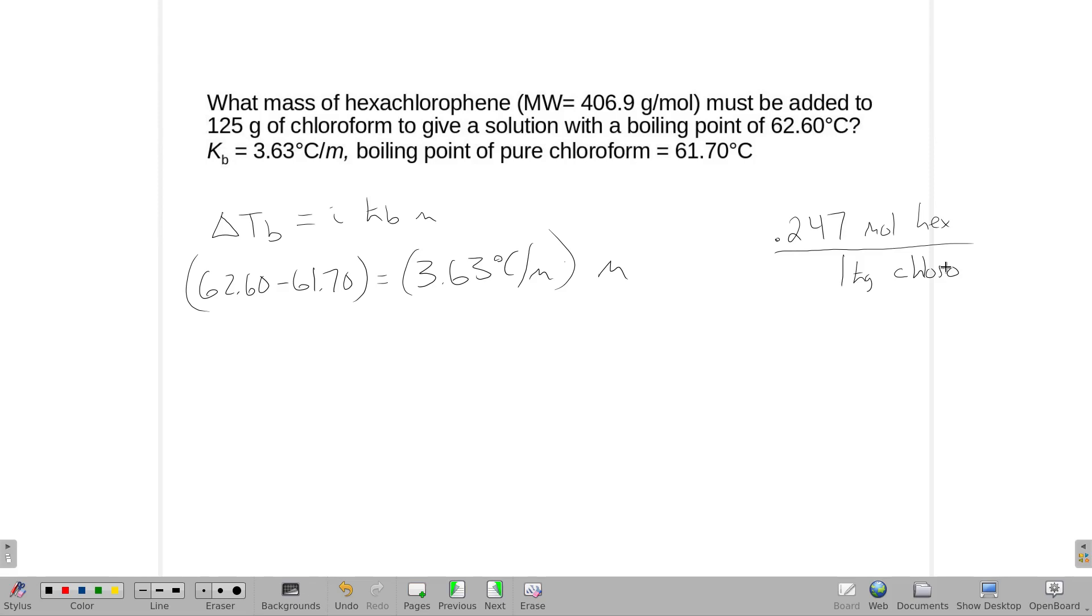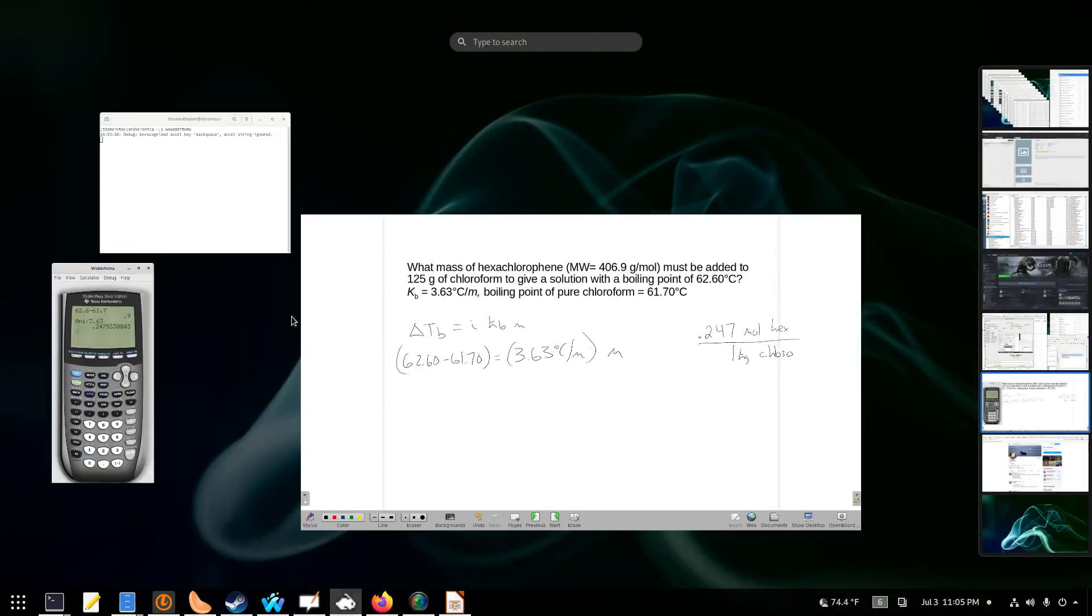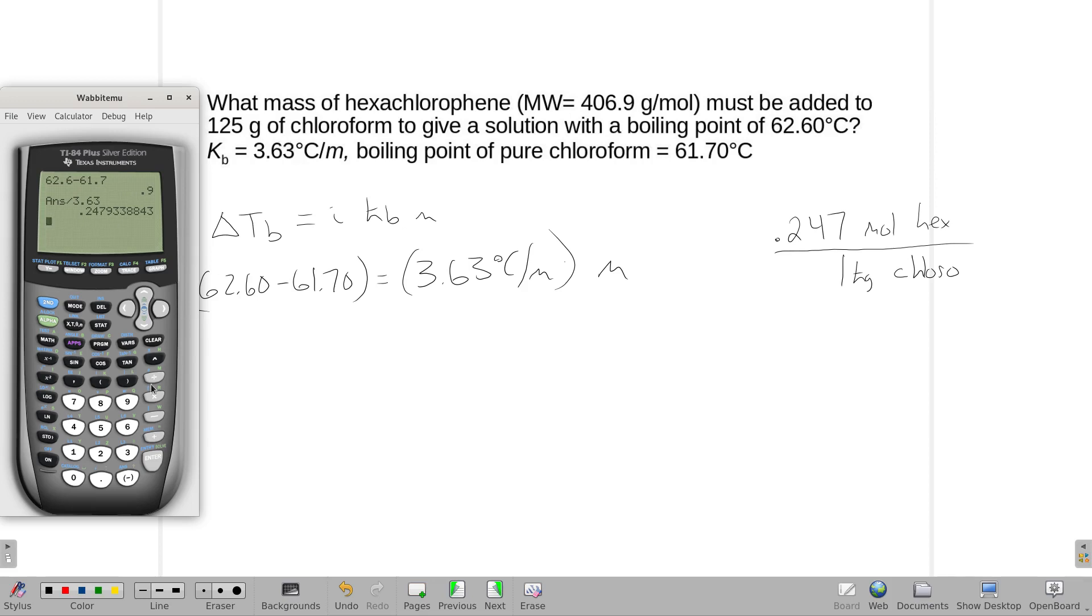Alright, so I'm going to get rid of the chloroform from my number by multiplying this by the kilograms of chloroform we put in there. So, times 0.125. That number there should be moles of hexachlorophene. So to get the mass of hexachlorophene, we just multiply that by the 406, the molecular weight of the hexachlorophene. And we get an answer of 12, well, 13 grams.